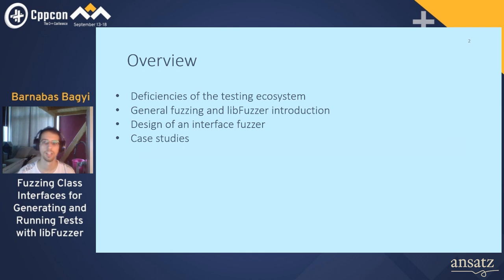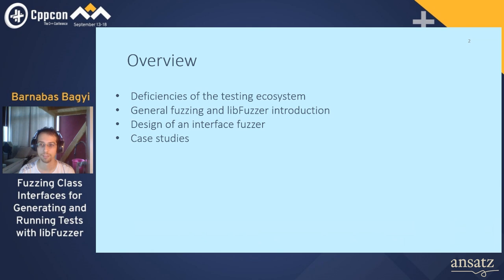Before we get into it, let me present the outline of what is to come. I will start by showing through example what is missing from the current testing ecosystem and why we should not be satisfied by using only unit tests to test our classes, even though they are great too. After that, a brief introduction of fuzzing in general and Clang libfuzzer will follow. Then we will go through the design of using these to create a newer testing method, which is meant to test our classes based on their interfaces only. Then we will finish off seeing the results we've achieved with this interface fuzzer in two brief case studies.